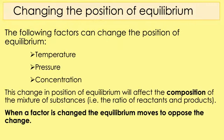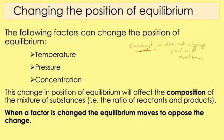So that's what the position of equilibrium is — what can we do to change it? Generally speaking, we want the position of equilibrium to be on the right because we want lots of products to sell and make money. There are three things that can change the position of equilibrium: temperature, pressure, and concentration. Importantly, a catalyst — which we discussed in rates of reaction — does not change the position of equilibrium. When we change the position of equilibrium, we affect the composition of the mixture, so the ratio of reactants to products changes.